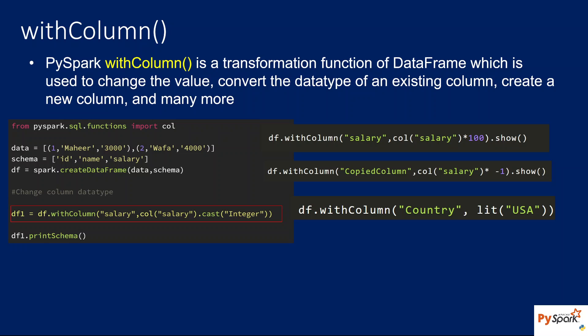The withColumn function will basically update the existing column — it can be a data type update, a value update, or it will add a new column altogether. Since it is trying to transform the data on top of the DataFrame, it is called a transformation function. There are a lot of transformation functions available in PySpark. Importantly, whenever you transform data on top of a DataFrame, you are not altering the original DataFrame — you create a new DataFrame out of it.